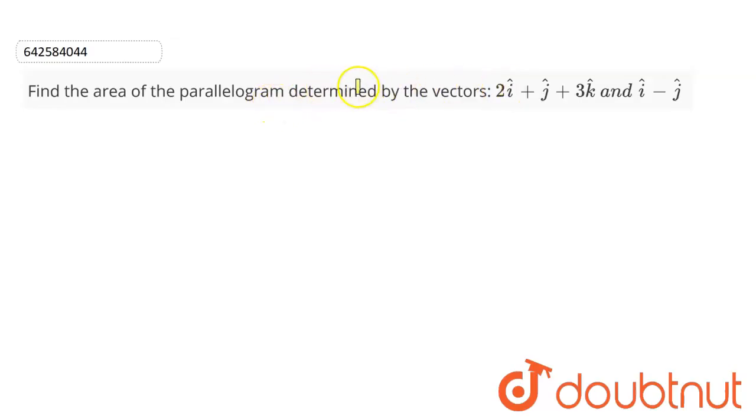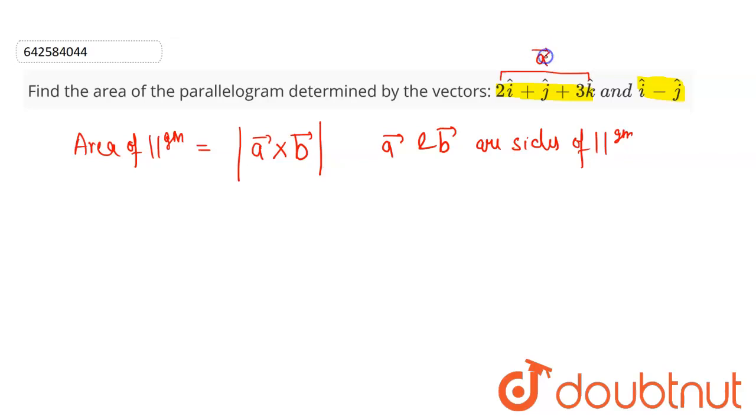So here we have to find the area of parallelogram determined by vectors. These are the two vectors given to us. Area of parallelogram is given by the formula, that is mod of A vector cross B vector, where A vector and B vector are representing sides of parallelogram. So let us take this as side of one of parallelogram as A vector and other side is B vector.